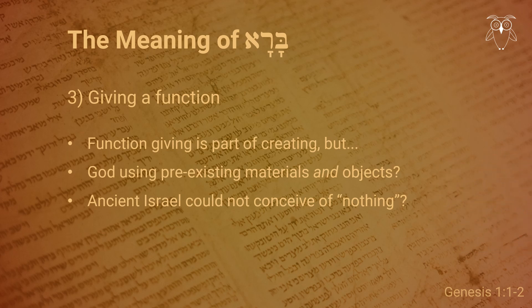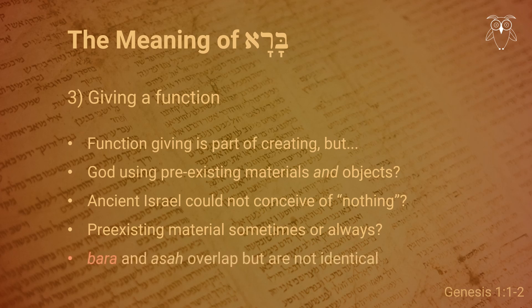It is true that an abstract philosophical concept of nothingness is quite sophisticated, but to preemptively rule out the possibility that a certain group of people could not have had this concept — either abstractly, metaphorically, or intuitively — strikes me as a little arrogant. Also, the fact that in some cases God used pre-existing materials to bara, as implied by context, does not mean that he does so every time. And the fact that the same object can be referred to as both bara'd (created) and asah'd (made) does not mean that there can be no meaningful distinction between the two.